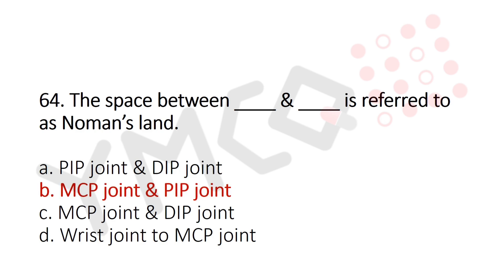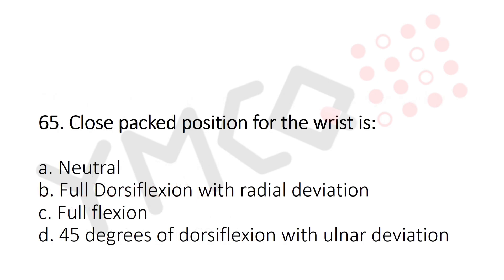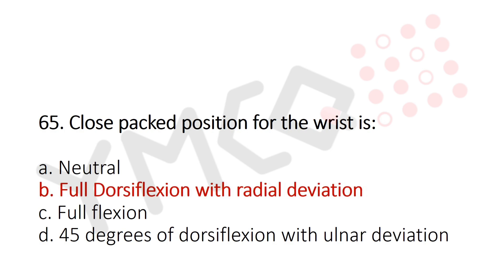Question 65: The closed-pack position for the wrist is — Option A: neutral, Option B: full dorsiflexion with radial deviation, Option C: full flexion, Option D: 45 degrees of dorsiflexion with ulnar deviation. The answer is Option B, full dorsiflexion with radial deviation.